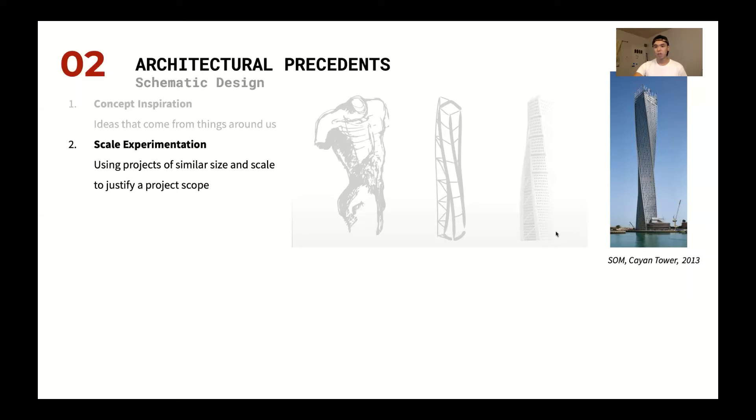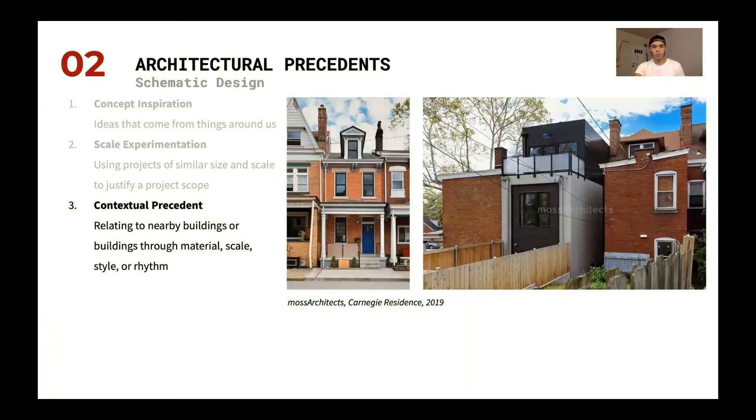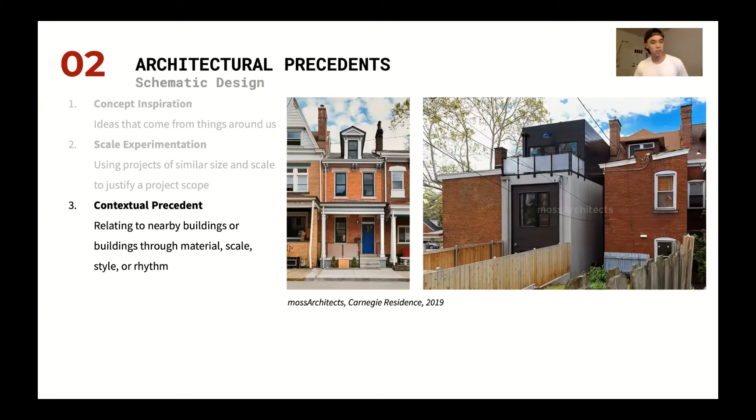And then the third possible way that architects use as an experience to design is actually the contextual precedent. Moss Architects does this really well in the Carnegie Residence based in Melonsville. I really like what they did here with the rear porch, which was a very contextual approach relating to the two protruding spaces on the neighbors. The balcony actually protrudes out and then you step back the building.